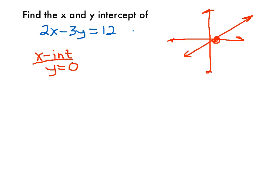So to find the x-intercept, plug 0 in for y and solve for x. We'll get 2x equals 12, divide by 2, we get x is equal to 6.